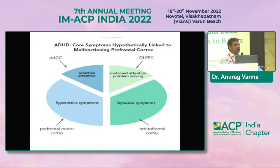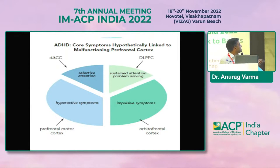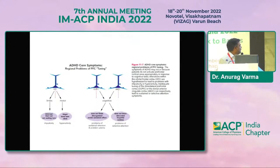To summarize, you have the dorso-lateral cingulate circuit which is for selective attention, the dorso-lateral prefrontal cortex which is for sustained attention, the impulsive symptoms which are from the orbitofrontal cortex, and the premotor areas where the hyperactive symptoms are present. Usually in adults, you see a mix of these symptoms, and predominantly the DACC and DLPFC are the areas which are more inefficient. The orbitofrontal cortex is intimately related to the limbic and motor areas also.